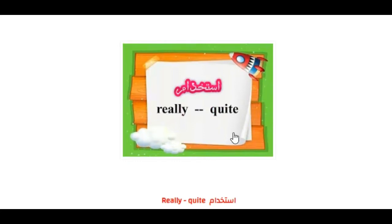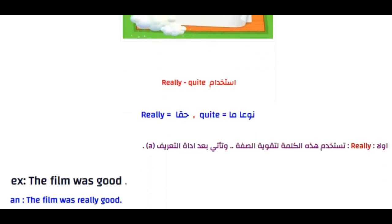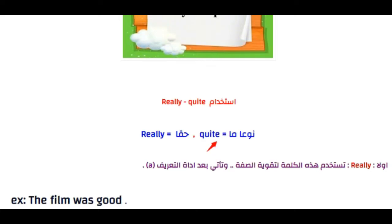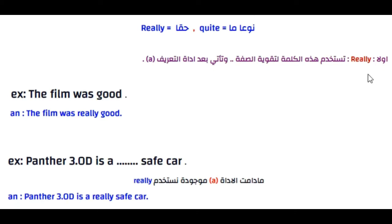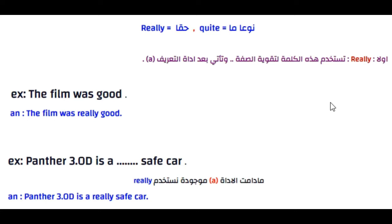الموضوع الثاني: استخدام Really و Quite. 'Really' معناها 'حقاً'، و'quite' معناها 'نوعاً ما'. أولاً استخدام 'really': تُستخدم هذه الكلمة لتقوية الصفة وتأتي بعد أداة التعريف 'a'. تستخدمها إذا كانت الصفة مؤكدة وإيجابية.